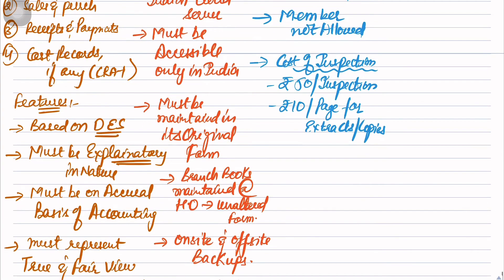Who can inspect? Directors. But if the director himself is coming, he can inspect any kind of information in the Books of Accounts. However, if the director himself is not coming and he is sending his legal representative, power of attorney holder, or his agent - in that case, such people coming on behalf of the director will not be allowed to have any access over the sensitive or financial information contained in the Books of Accounts.